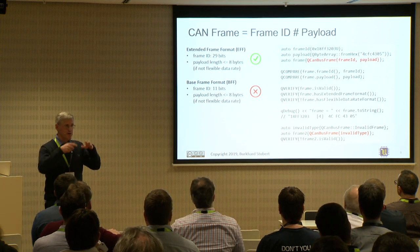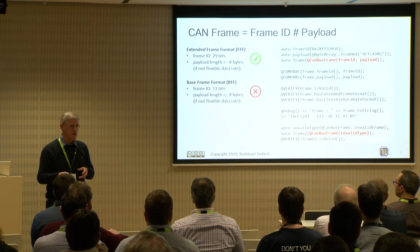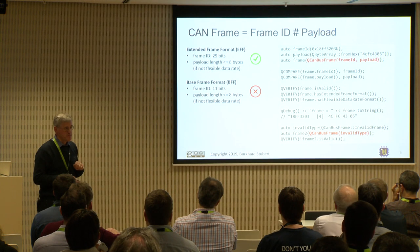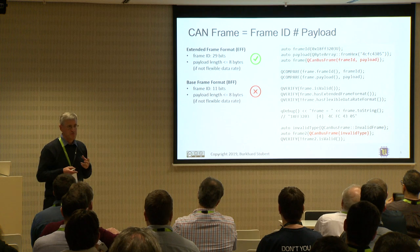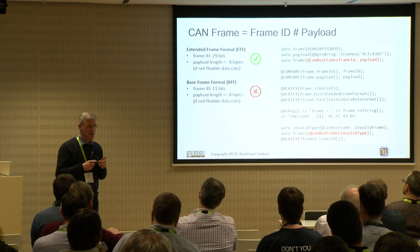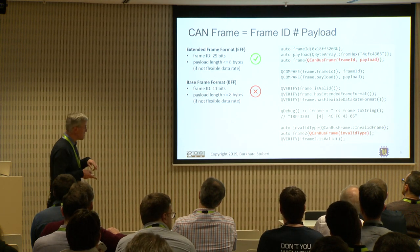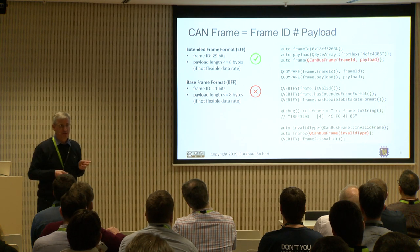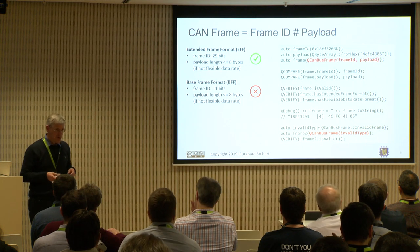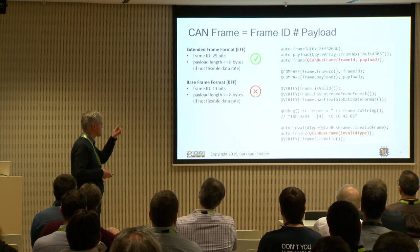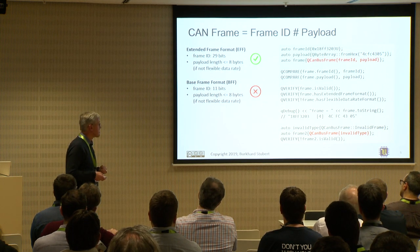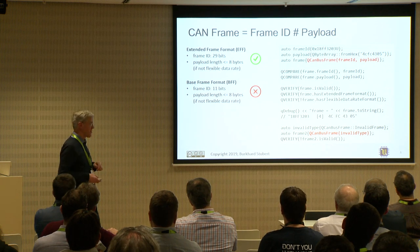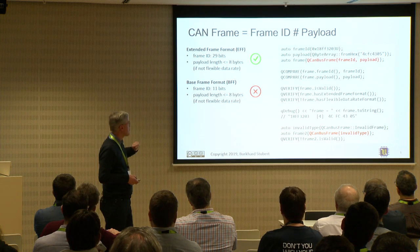CAN frames always consist of a frame ID and a payload of just a few bytes. There are two types: extended format with a 29-bit frame ID, and base format with 11 bits. The extended frame format is what you typically see in farming and construction machinery. The payload length is always 8 bytes or fewer, unless you use flexible data rate devices, which are rare.